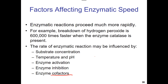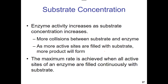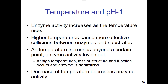Cofactors are things that help enzymes do their job. ATP can be a cofactor. Sometimes simple ions like magnesium, iron, calcium, manganese, or zinc — single atoms that sit in a pocket of an enzyme and help it stick to or bind things.